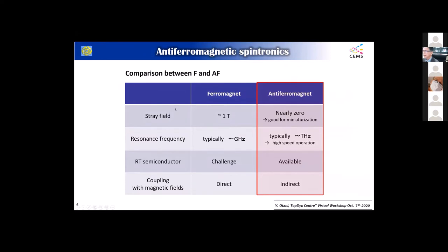I'd like to simply compare the antiferromagnet with the ferromagnet. Even in a collinear antiferromagnet, the stray field is nearly zero — this is very good news for miniaturization. Secondly, regarding resonance frequency: in the case of ferromagnet, it's typically gigahertz, but in the case of antiferromagnet, the exchange field and anisotropy field become very important, so terahertz-speed operation is possibly achievable. We can also have semiconductors, insulators, and also metallic behaviors with antiferromagnets. The bad news is there is no direct coupling with magnetic fields, so it becomes very difficult to control the magnetic state.